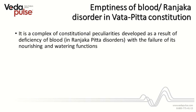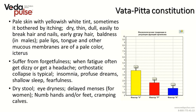Let's look at a detailed description of the syndrome. First of all, it is a special state of constitution developed as a result of the lack of blood. We say that the lack of blood is conditioned by malfunctioning of one of the sub-doshas, Ranjaka Pitta. It starts development of various states and processes in the body that depend on the amount of blood, its nourishing and moistening functions. The syndrome would take place only in case of substantial imbalance.